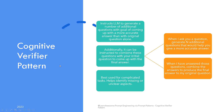The cognitive verifier pattern works by instructing large language models to generate a number of additional questions, with the goal of coming up with a more accurate answer than with the original question alone. You can also instruct it to combine answers to those questions with the original question to produce the final answer. It goes like this: when I ask you a question, generate N additional questions that would help you give a more accurate answer. When I have answered your questions, combine the answers to produce the final answer to my original question.